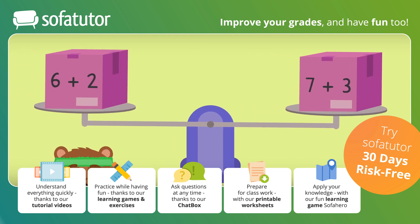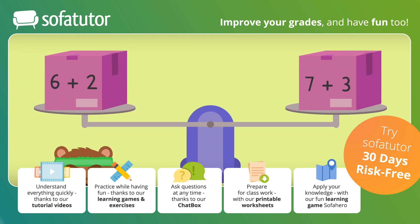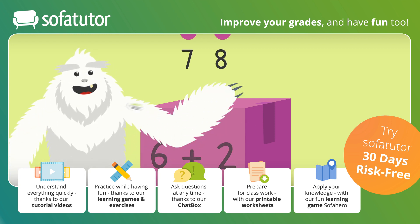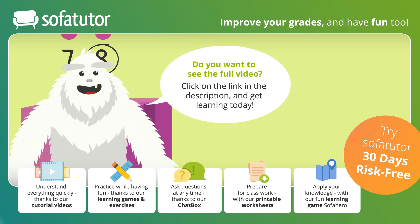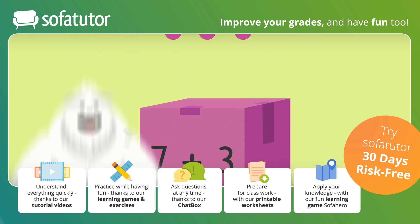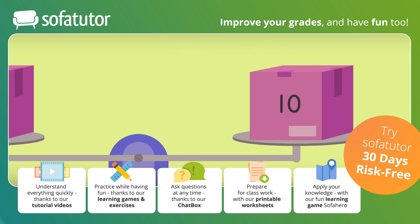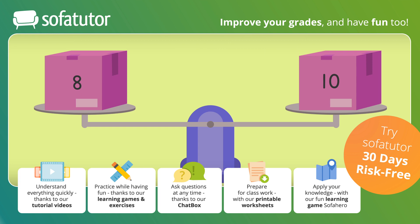Mr. Squeaks is weighing even more boxes. The first box has the expression 6 plus 2, and the second box has the expression 7 plus 3. First, solve each expression. What is 6 plus 2? Try counting on your own. 6 plus 2 is 8. Next, what is 7 plus 3? 7 plus 3 is 10. Finally, compare the answers. Are they the same number? No, these expressions are not equal.